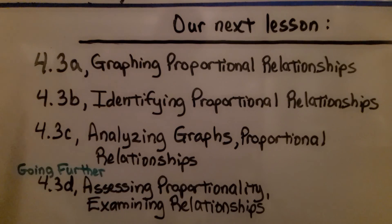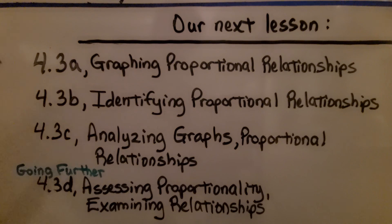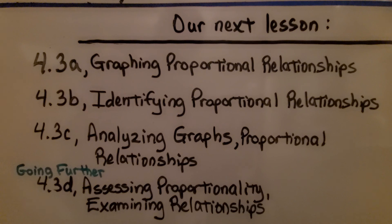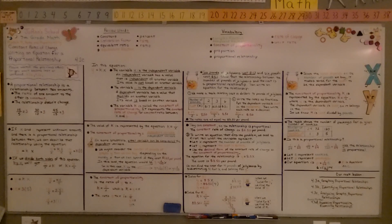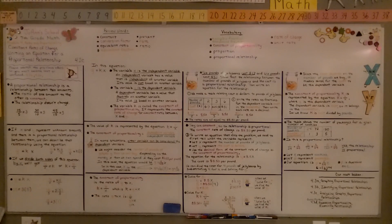We're going to move on to Lesson 4.3, which has four parts including the going-further section. The first part is graphing proportional relationships — we'll actually graph these relationships with x and y values on a grid, which some of you may remember doing in sixth grade math. I hope you'll join me for the next lesson, and I hope you have a wonderful day.